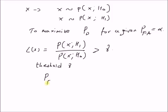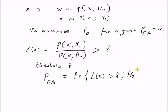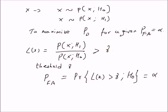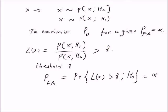The threshold gamma is determined as follows: we solve the relation where the probability of false alarm is the probability that the likelihood ratio is greater than gamma under the null hypothesis, and this probability should be equal to alpha. The value gamma basically determines the threshold. Let us look at an example illustrating this theorem.